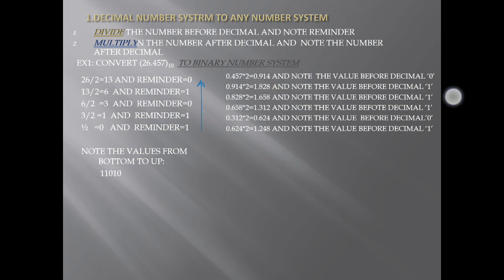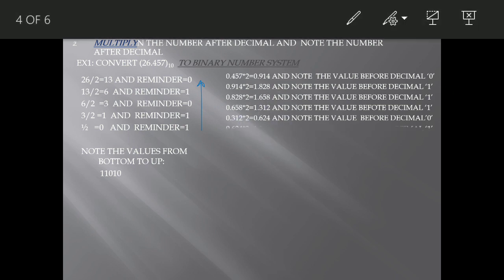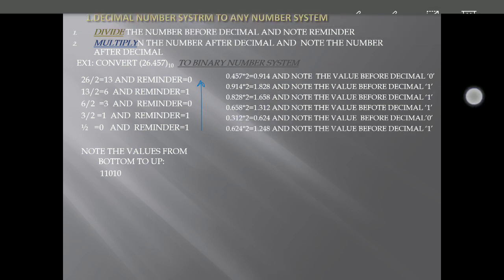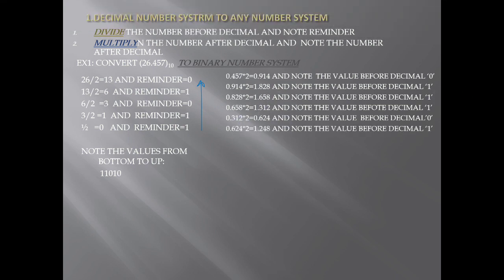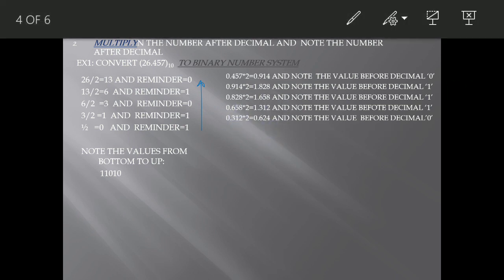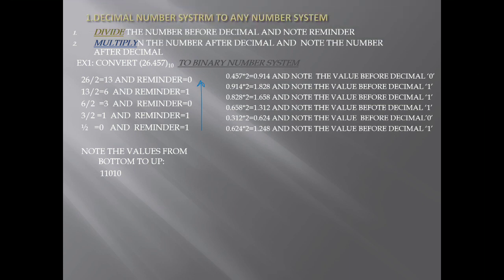Continuing: 0.624 is obtained and we note the digit before the decimal, which is 0.